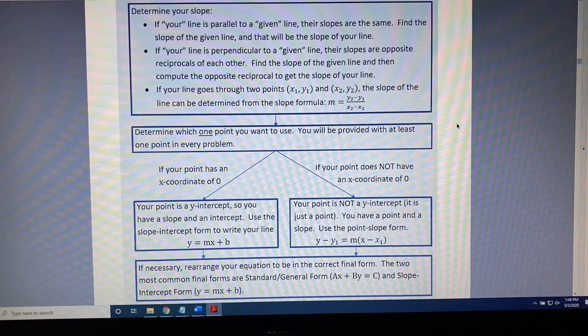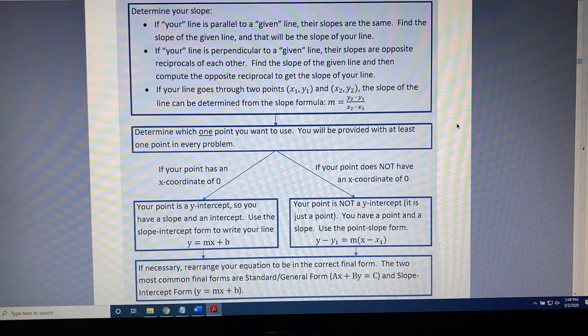Once we've chosen a left or right path, we will then take information and place it into one of our line writing forms, either slope-intercept form or point-slope form. And then finally, if necessary, we rearrange the equation to be in the correct final form.